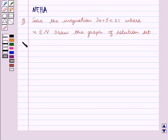Let's start the solution now. We are given the inequality 3n plus 5 is less than 21. Now we subtract 5 from both the sides.